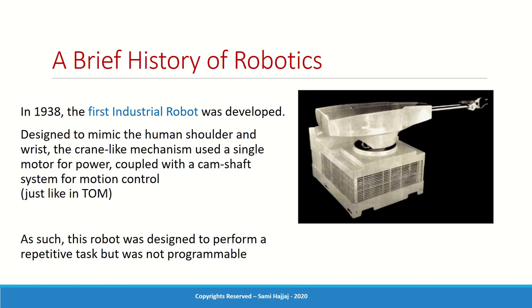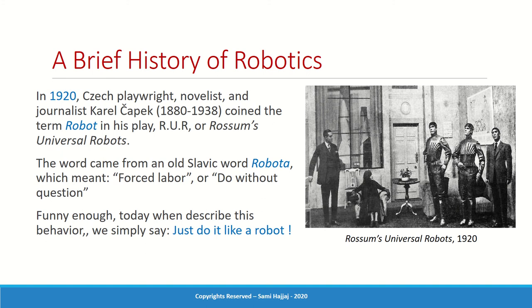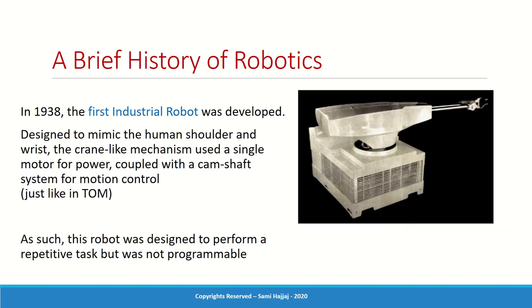Around that same time we saw social robots. In 1938, the very first industrial robot was developed — though it wasn't really a robot the way we understand it today. It was a crane-like mechanism that uses a camshaft system for motion control: a single motor, a camshaft, and an elaborate mechanism to achieve repetitive back-and-forth motion. Very similar to what you learn in theory of machines — mechanisms, camshafts. It was a machine with an arm that goes back and forth, with no programming or control, just switch on and off.